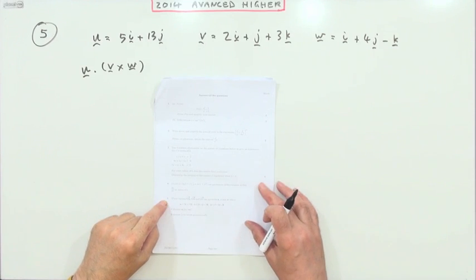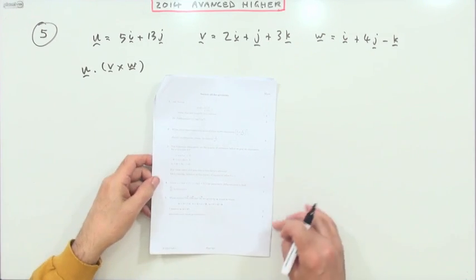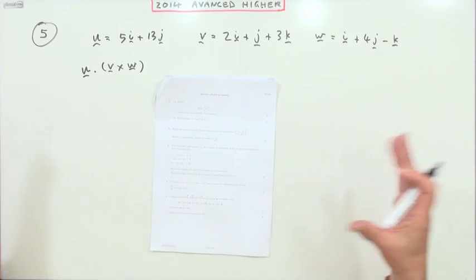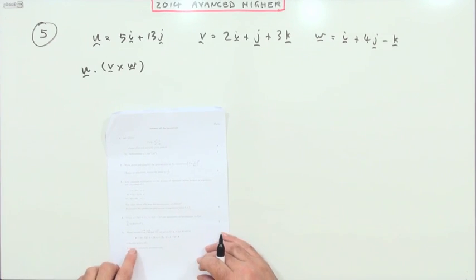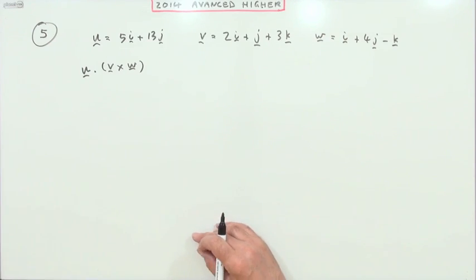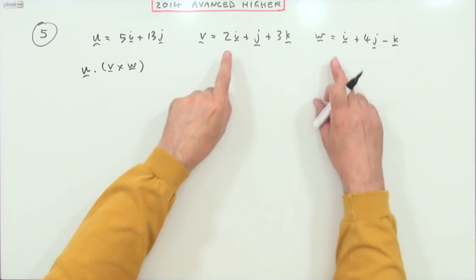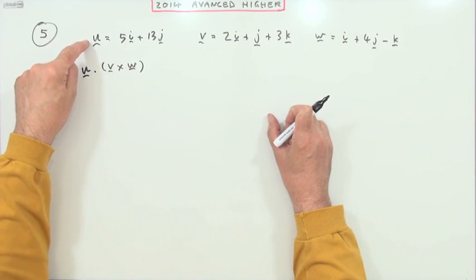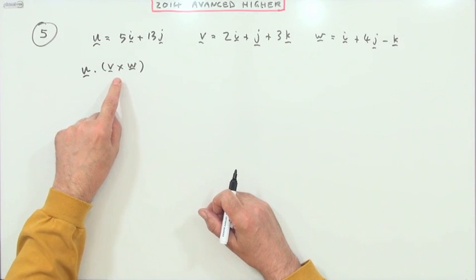Number five from the 2014 advanced higher, the only vectors question appears to be here, just a little one for four marks after that huge chapter. What's it say? Calculate this. Now either you recognize it or you don't. If you don't recognize it, you'll be doing the cross product of those two and then the result of that you'll be doing a scalar product with that. Or if you recognize that as the scalar triple product, you'd probably batter straight in.